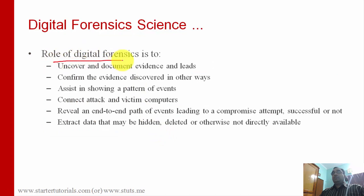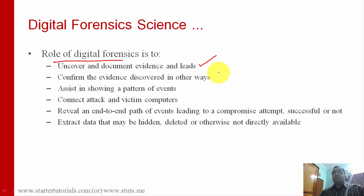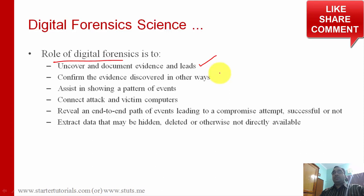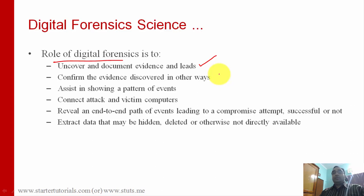What is the role of digital forensics — what do the people do here? The first thing is to uncover and document evidence and leads. That is finding out the required things on the computer storage, either volatile storage or non-volatile storage, and after they find something they will document that, either electronically or non-electronically. Documenting means writing down: I have searched for so and so files, I have found these files, and these files look suspicious — they will write that in the document.